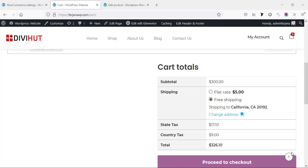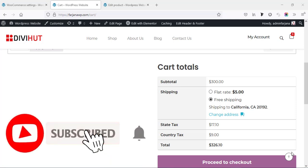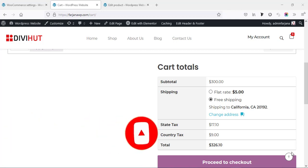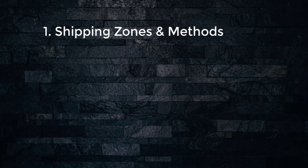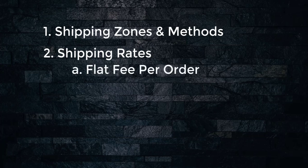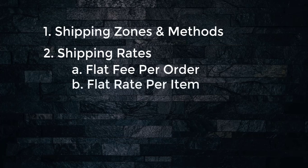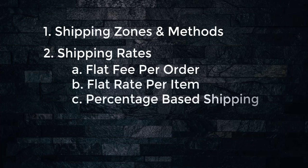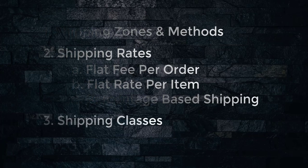In today's tutorial, I'll try to cover all possible ways for e-commerce shipping which you can add to your e-commerce website. I have divided our shipping calculation into three simple steps. First, shipping zones and methods. Second, shipping rates — covering three types: flat fee per order, flat rate per item, and percentage-based shipping. And number three, shipping classes.